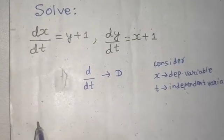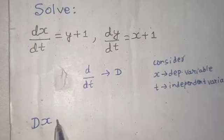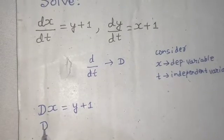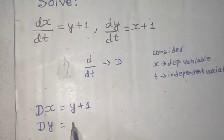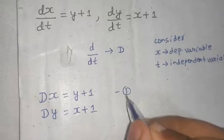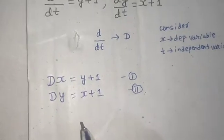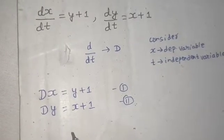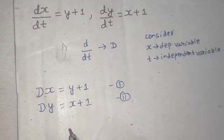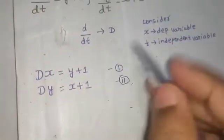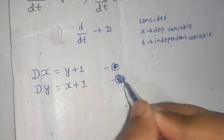With this notation, the first equation can be written as D(x) = y + 1, and the second equation as D(y) = x + 1. Let's name these equation 1 and equation 2. Now we can try eliminating one of the variables.